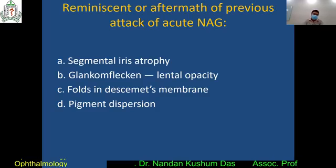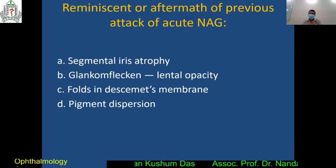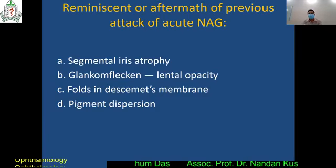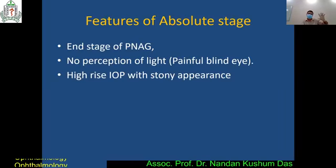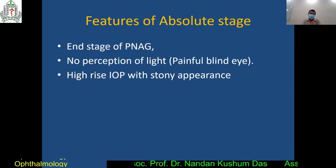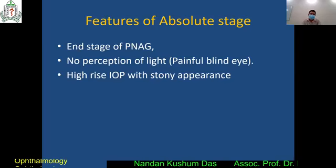Another important MCQ: glaucomflecken found in primary open-angle glaucoma — true or false? The answer is false. Glaucomflecken is found particularly in acute narrow-angle glaucoma. There are also some stages of narrow-angle glaucoma. The final stage is termed absolute glaucoma, which is usually a painful blind eye with very raised IOP and a stony hard appearance.